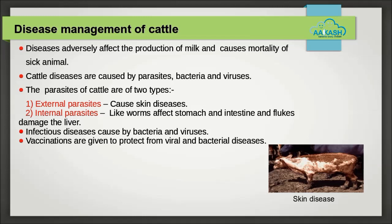Infectious diseases can spread to other animals on the farm and also to human beings. These diseases can be bacterial, like anthrax and tuberculosis, or viral, like cowpox or foot and mouth disease. For prevention against viral and bacterial infections, vaccination must be given to farm animals.